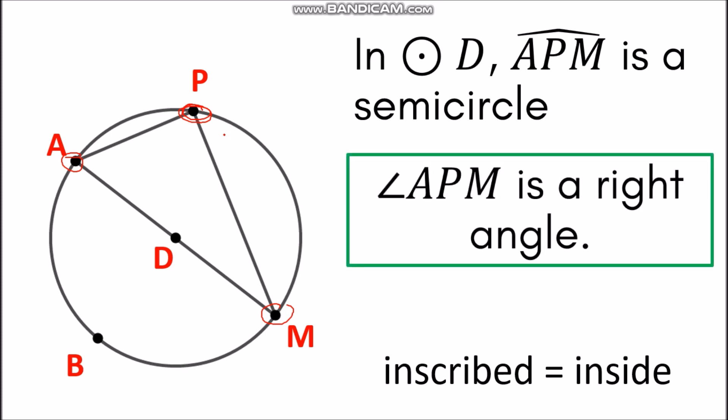The vertex is on the circumference. Applying Theorem 98, we can say that angle APM is a right angle, which means it measures 90 degrees. So whenever you have an angle inscribed in a semicircle, the measurement of that angle will be equal to 90 degrees and it is considered a right angle.